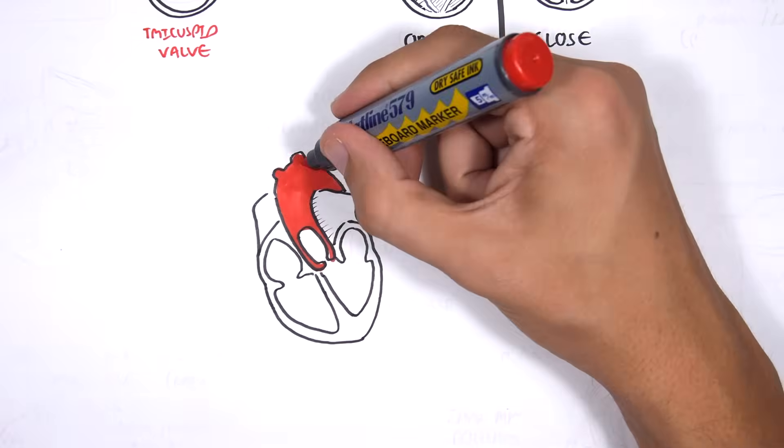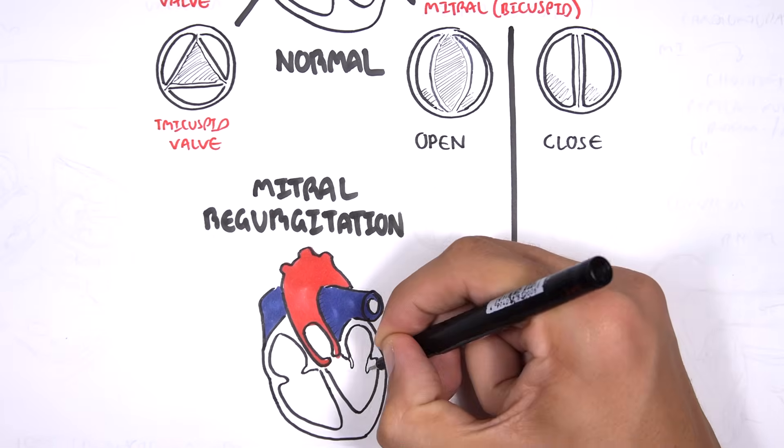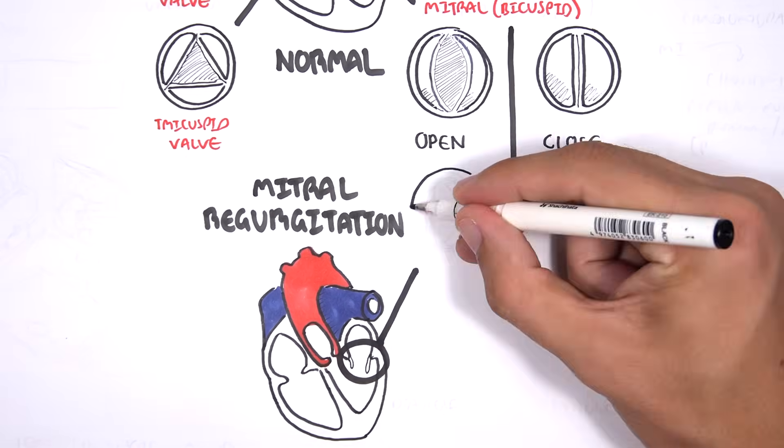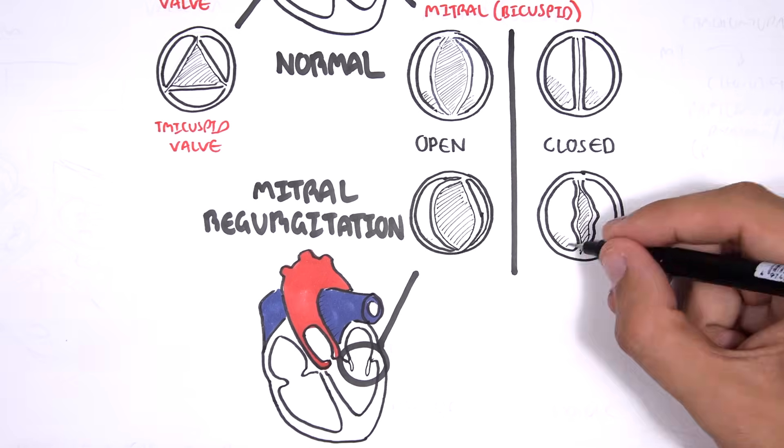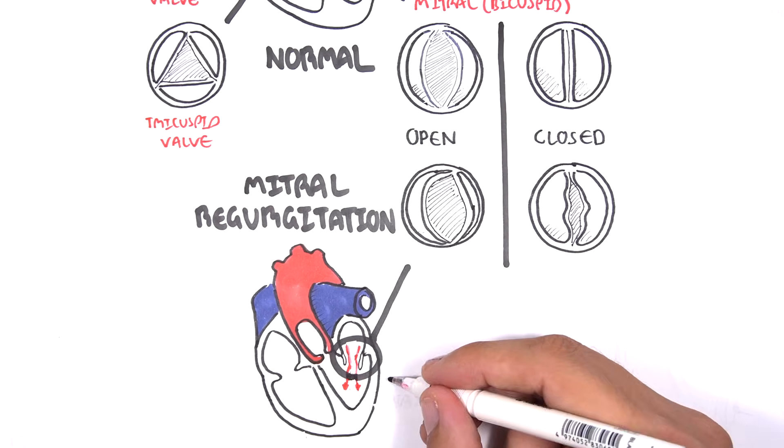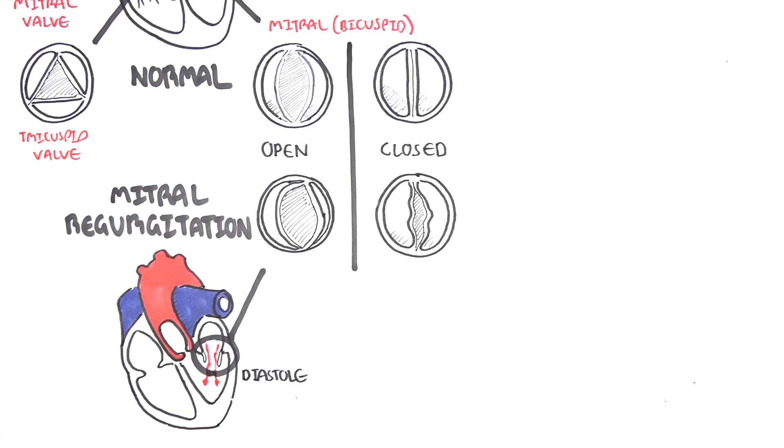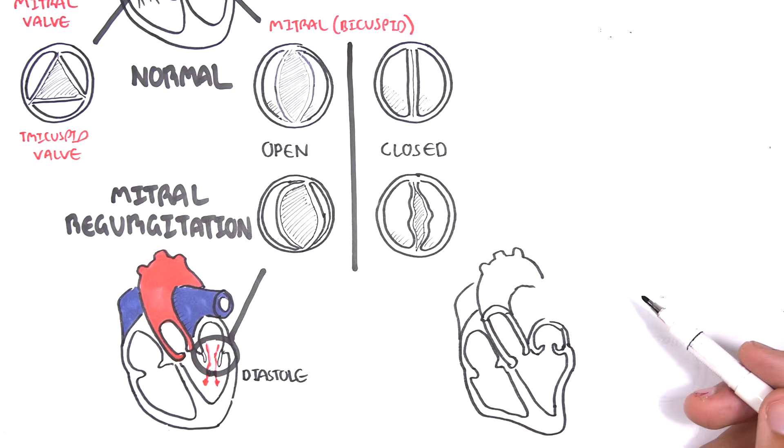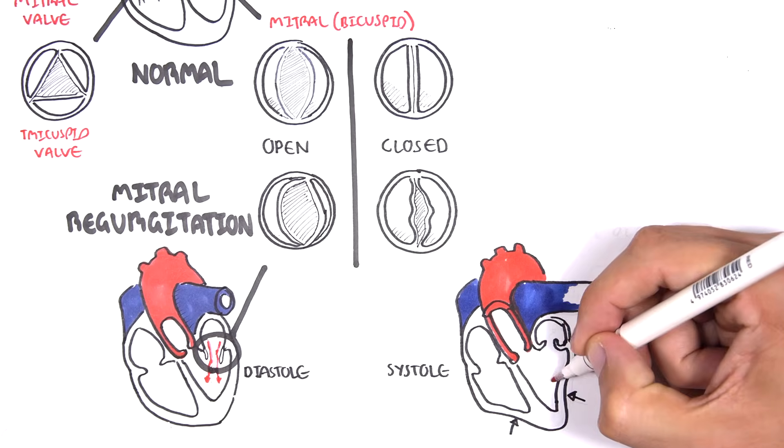In mitral regurgitation, the mitral valve is not strong, and this is due to a number of reasons. Because of this, the mitral valve does not open and close properly. During diastole, the heart with mitral regurgitation is able to fill the ventricles with blood. During systole, however, the mitral valve cannot close properly.